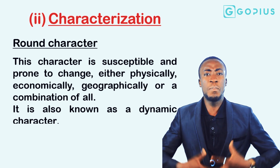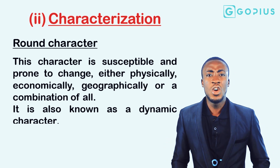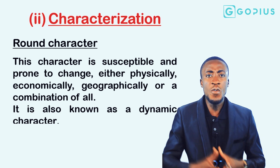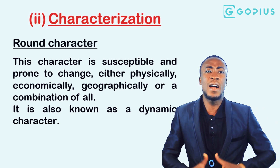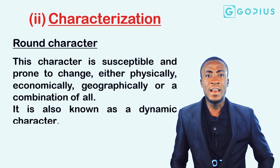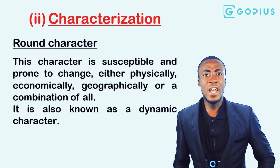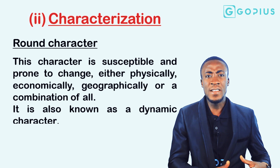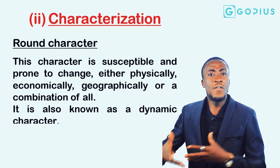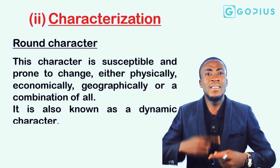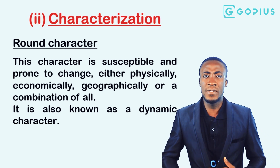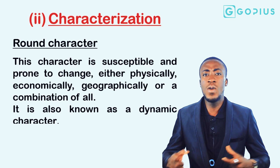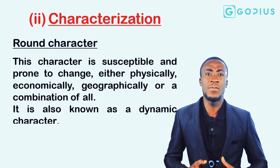Amaka was betrothed to Obiora at a very tender age and was accused of infertility. Because of her inability to conceive, she moved away from the village to Lagos, where she met Father McLuckie and conceived twin boys. She then moved from Lagos to America, where she got her university degree and returned to her village to build a new life. We can clearly see the levels of growth, change, and development this character undergoes — that is why she is called a round character.